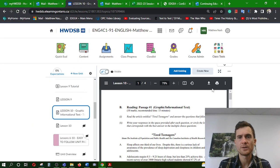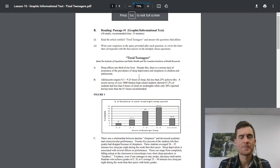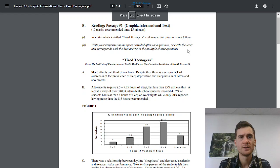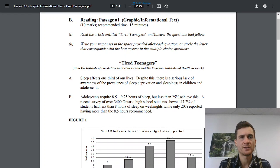Hello! We are going to go through lesson 10. Lesson 10 is a graphic informational text. Graphic means picture, information means writing about something without any opinion, just facts so that you can understand a topic.